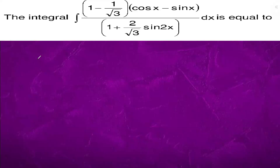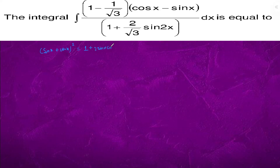When this type of question is given, we will try to form sin2x. We have sin x plus cos x whole square equals 1 plus 2 sin x cos x, which equals 1 plus sin2x. So sin2x equals sin x plus cos x whole square minus 1. We will substitute sin2x in the denominator.